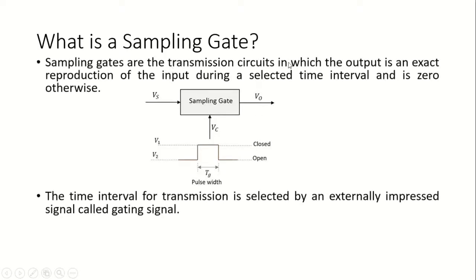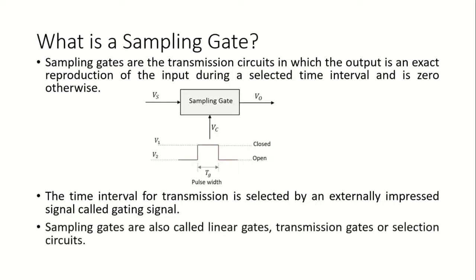Sampling gates are transmission circuits in which the output is an exact reproduction of the input during a selected time interval, otherwise it will be zero. That time interval is given by a signal called the gating signal, represented as vc. Sampling gates are also called linear gates, transmission gates, or selection circuits.